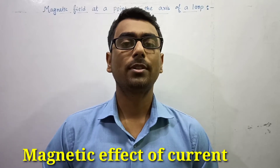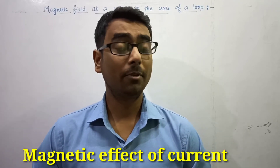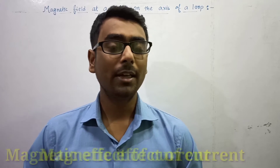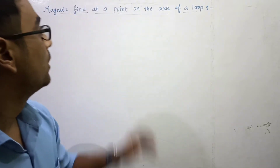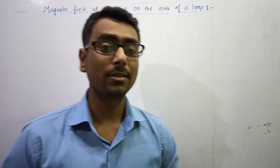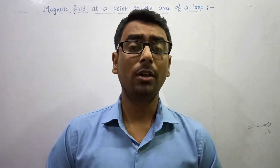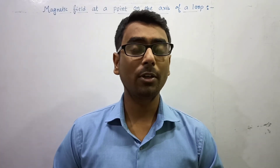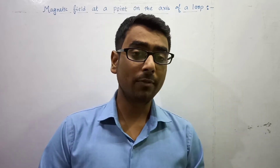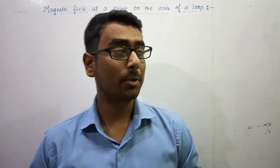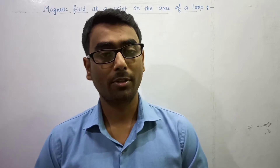Hello students. Today we are going to do a derivation of magnetic field at an axis of a circular loop — magnetic field at a point on an axis of a loop. We are going to use the Biot-Savart law to derive the expression of this magnetic field at an axial point.